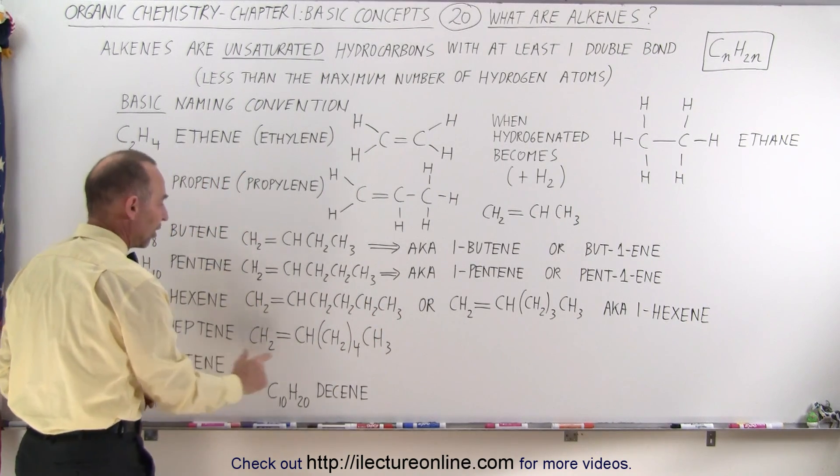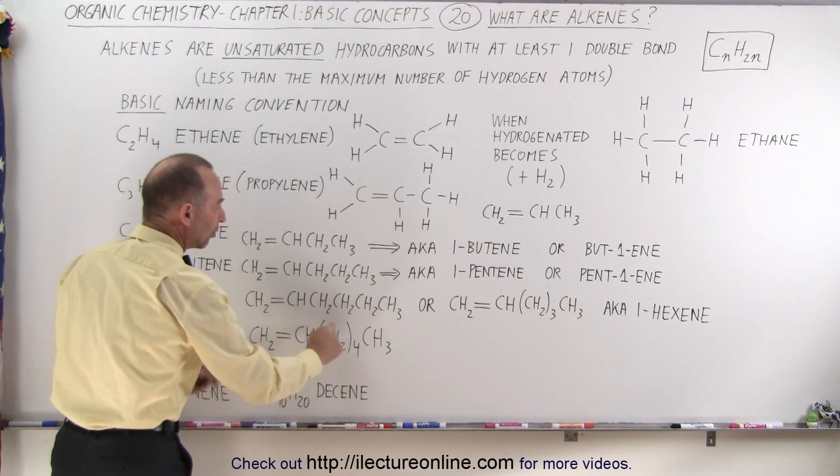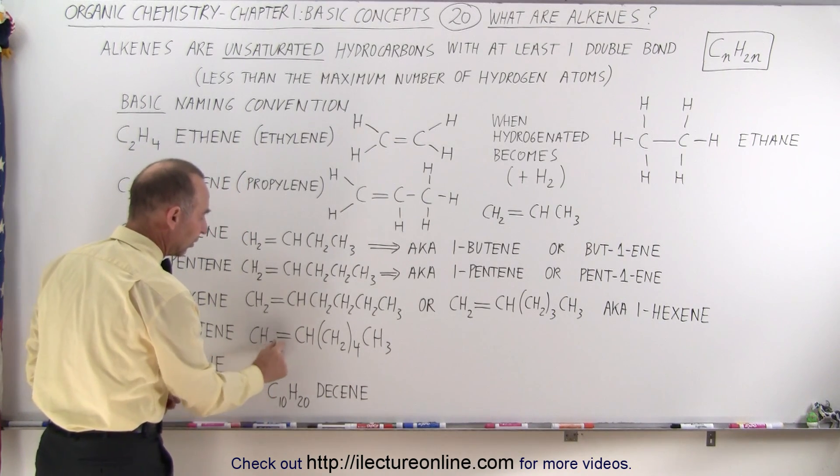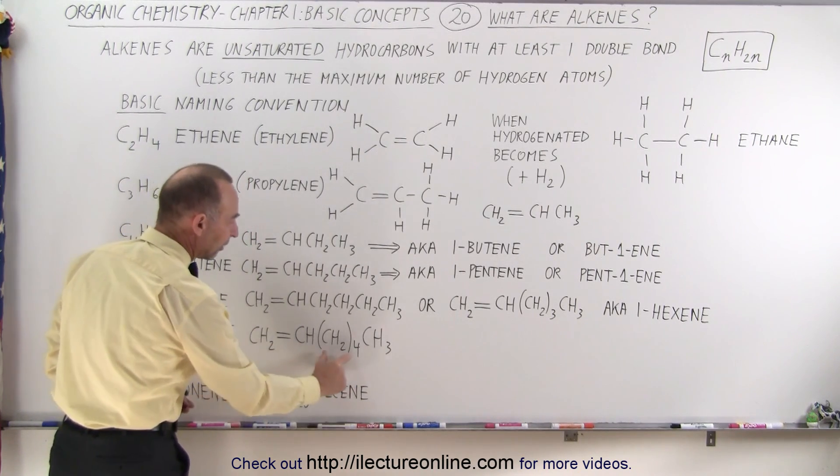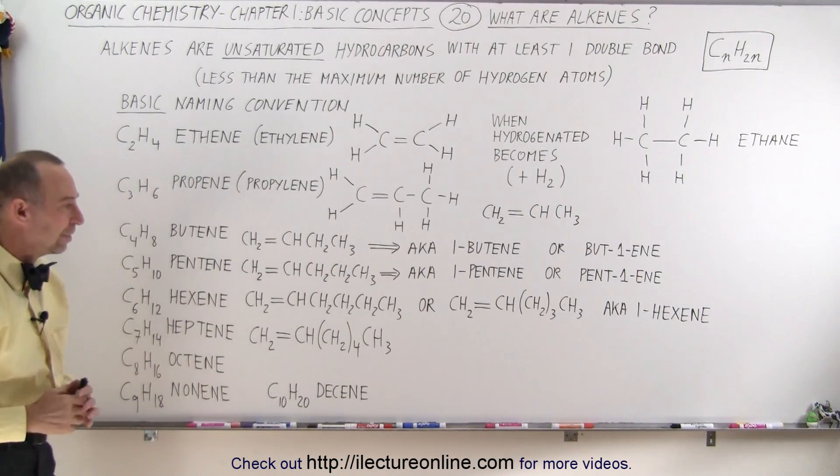For example, heptene, which has four CH2 portions in the chain, we simply put parentheses around the CH2 and indicate that there's four of them. So we have a CH2 in the front, double bond, a CH, then four CH2s, and then a CH3 in heptene.